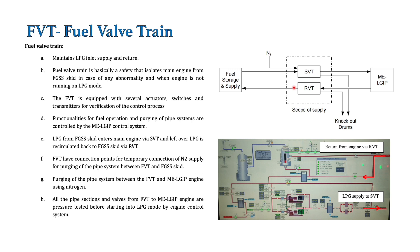First we will see the overview of the whole fuel wall train system, and then separately the supply wall train and the return wall train. As a single unit, the fuel wall train maintains the LPG inlet supply and the return. From the FGSS system, LPG does not go directly to the main engine — it goes via the supply wall train, then to the main engine, and from the main engine through the return wall train it goes back to the supply system, which is the FGSS skid.